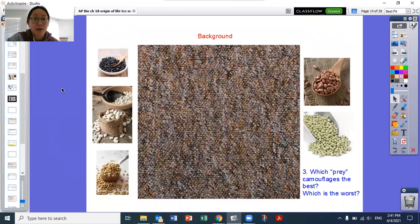Now we're taking into consideration that the background is a piece of carpet that looks like this. I brought up the pictures of the five prey species again. So your third question is to answer which prey camouflage is the best and which one camouflage is probably the worst. You're thinking about as a predator, which one would be the easiest to see and which one would be the hardest to see if you were trying to pick them up to eat.